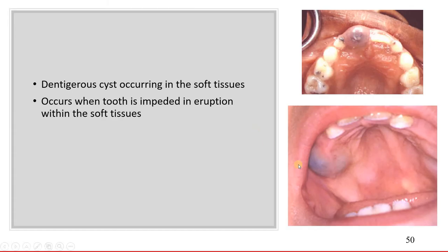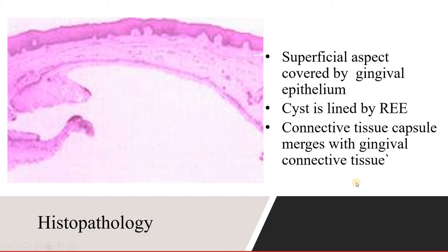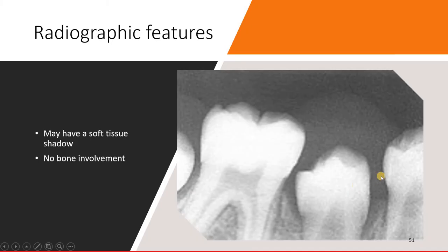So how does it look? It looks like a small hematoma around the site of eruption, usually seen at the same age when eruption is supposed to occur. You will have a bluish discoloration because of congestion of the vascularity at that particular site. Radiologically you will not find any lesion because there is no bone involvement. It is predominantly a soft tissue lesion, but you can still make out some radiolucent halo around the tooth.